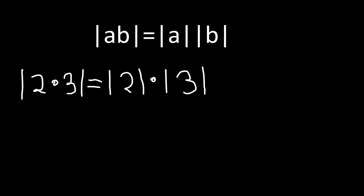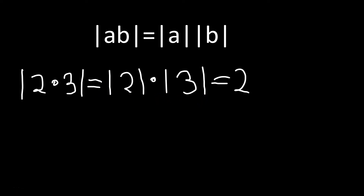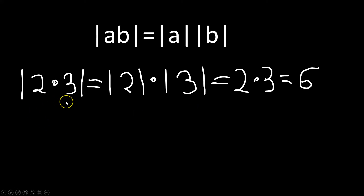Notice how it is now absolute value of 2 times absolute value of 3. Make sure you see the difference clearly. We then have 2 times 3, apply the absolute value, which is just 6. You could also just do 2 times 3, which is 6, and then absolute value of 6 is 6. This illustrates the rule with a simple example.